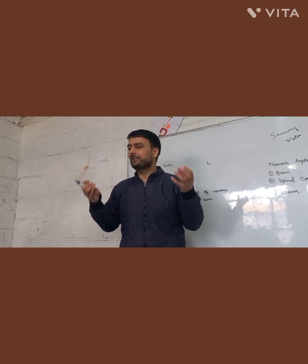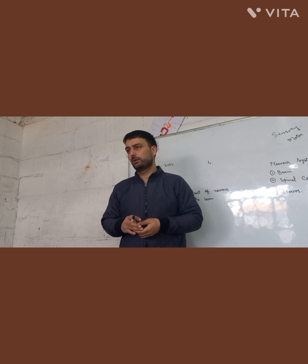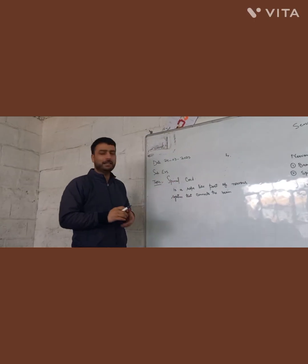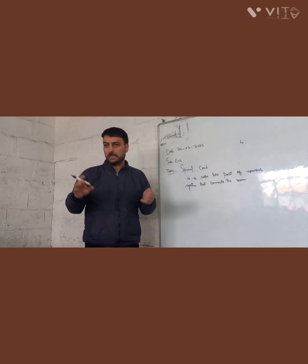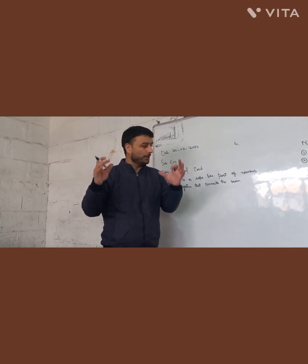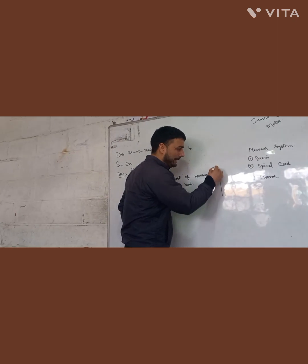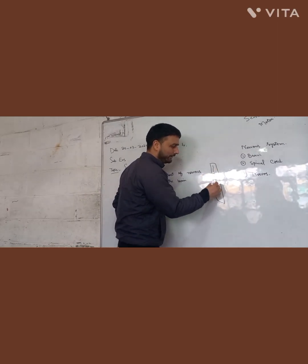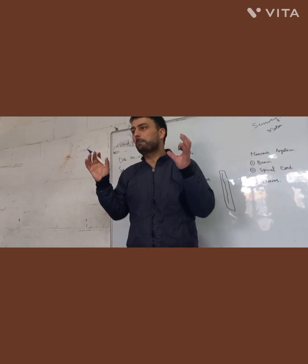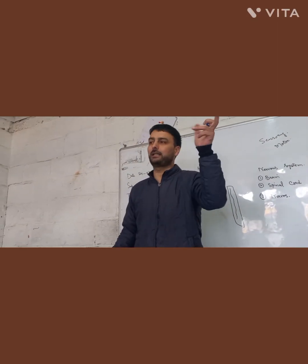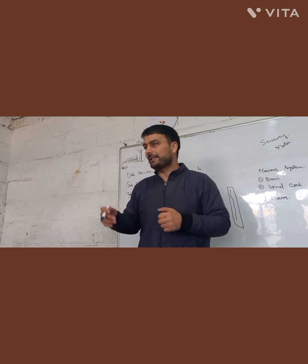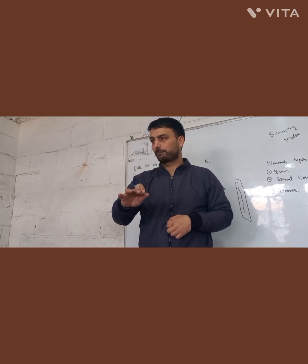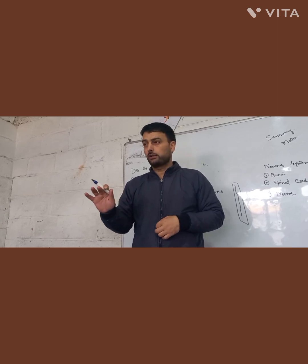Now, the spinal cord is the second part of our nervous system. The spinal cord is a rope-like structure made of a bundle of nerves — millions of nerves. It acts as a bridge between our organs and the brain, sending signals from organs to the brain.